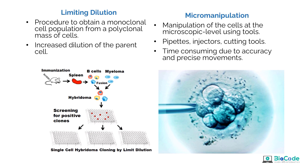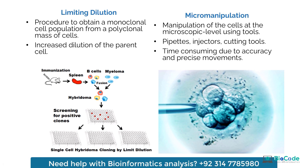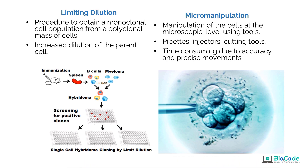Let's dive deeper into limiting dilution. We take a sample — for example from the spleen — where we can have B cells, myeloma cells, and other populations. We need to isolate these cells one by one. Limiting dilution is a procedure to obtain a monoclonal cell population from a polyclonal mass of cells — tissues that have multiple colonies or populations — and we select one single population, which takes a lot of time due to increasing dilution of the parent cell.